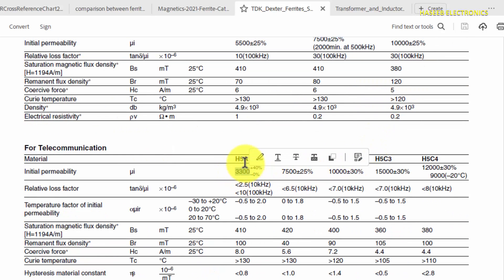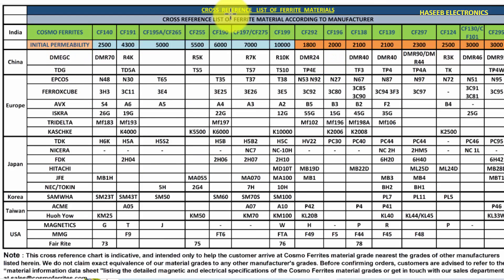We can find different cross-reference charts of different materials. Every manufacturer has cross-reference chart, so that we can compare the core data from one manufacturer to the second. If we are unable to find, for example, W material from Magnetics, so we can find from Taiwan A10 or KM100.